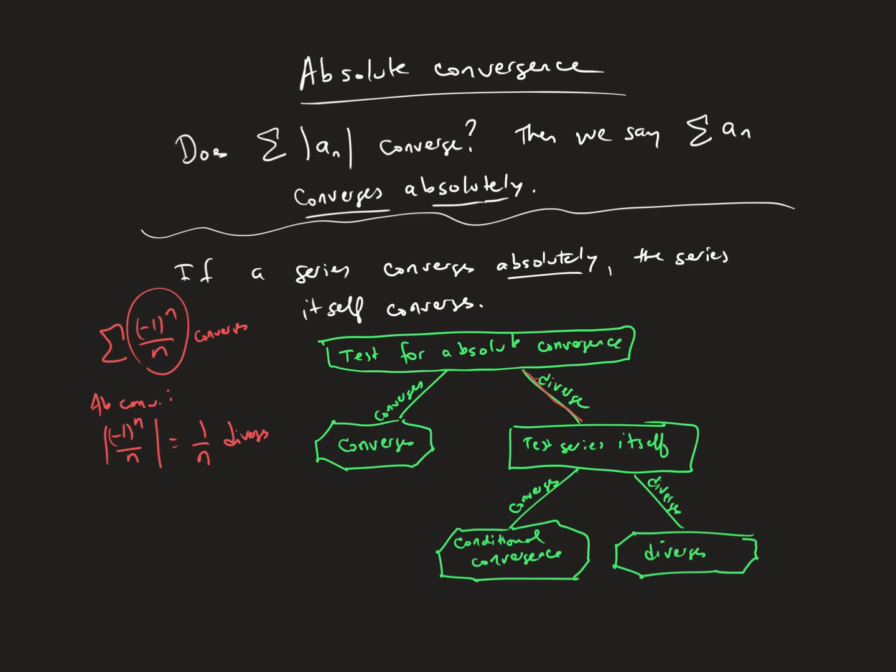So basically, the alternating harmonic series has conditional convergence. And we're going to talk more about these, the use of absolute convergence and conditional convergence, in class together. But I wanted you to see the basics.